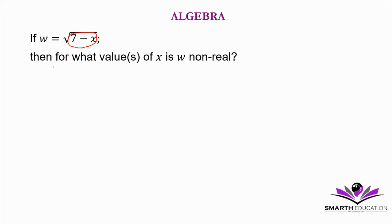So it means here, for w to be non-real, 7 minus x is less than 0. In that negative x is less than negative 7.